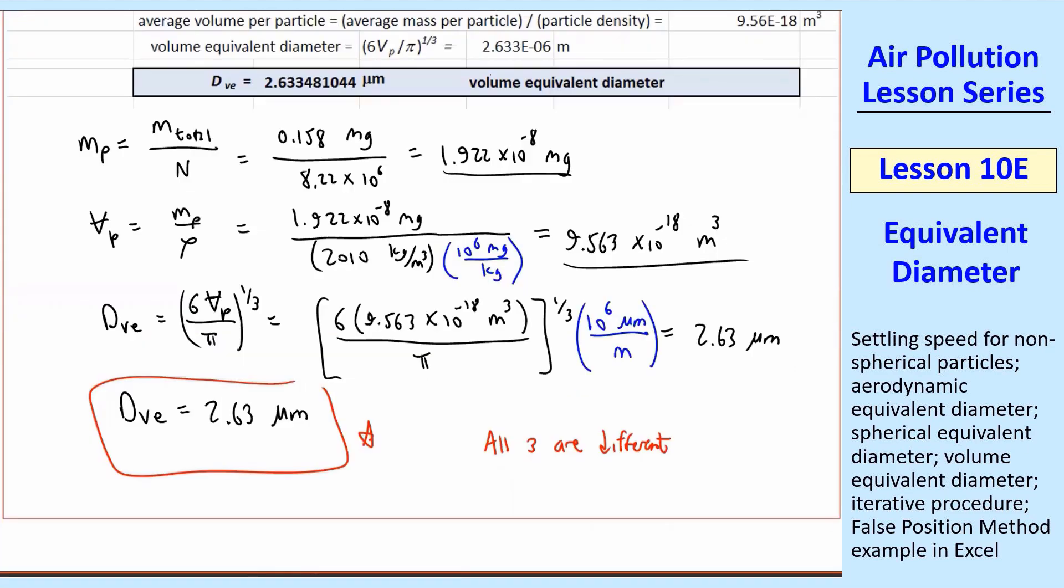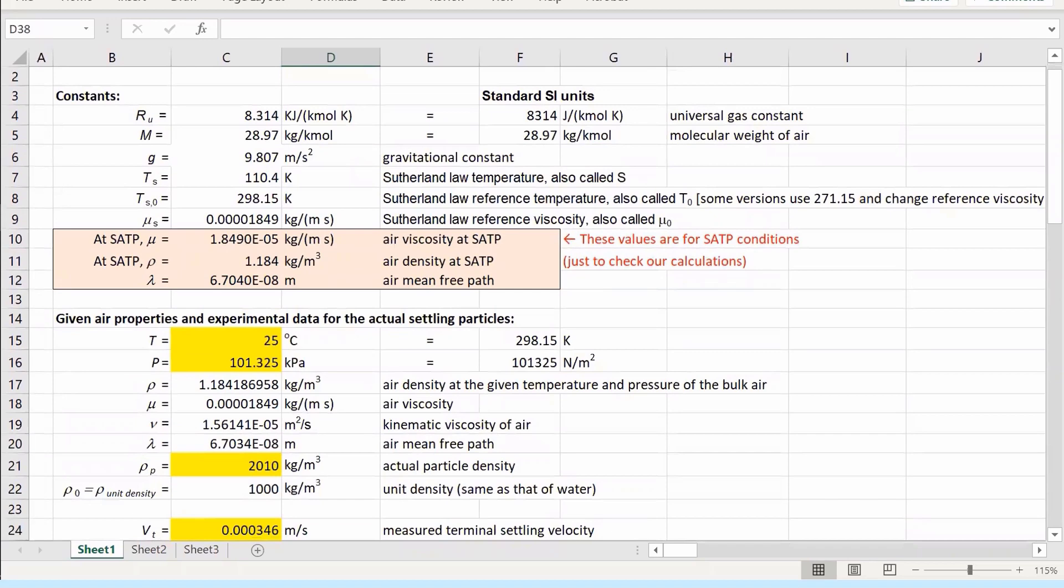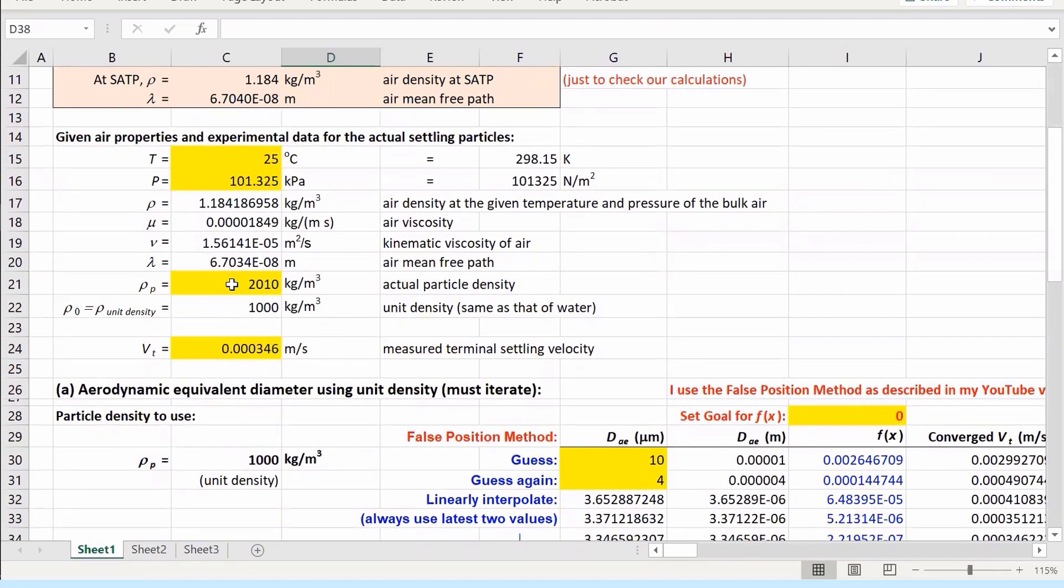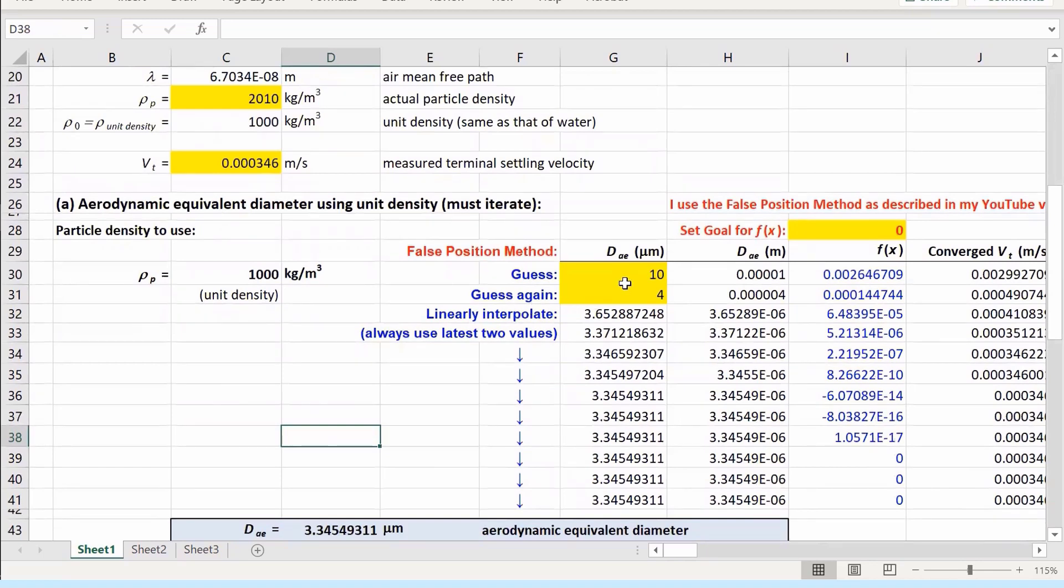Now I'm going to show you this in Excel. Again, I strongly recommend that you put this into your own software in Excel or whatever other software, so that you can figure these things out without trying to do it by hand. There's a lot of iteration involved. So this is very similar to what I had in the previous lesson. I kind of copied and pasted all these constants in, and then I enter my temperature pressure, density, particle density, vₜ, when we're doing the measured terminal settling velocity. So that's the value that I had given. You'll recognize the 2.0.1.0 from the problem that I just solved, and this is at SATP. I showed you this as a screenshot, but just to show you what's going on here, this in yellow is my first guess. My second guess, I convert to meters. My f(x) is my goal.